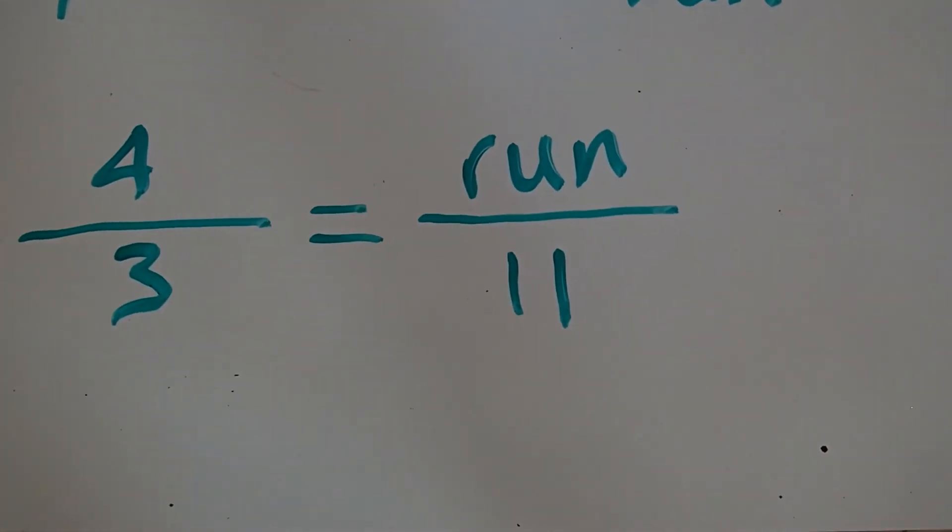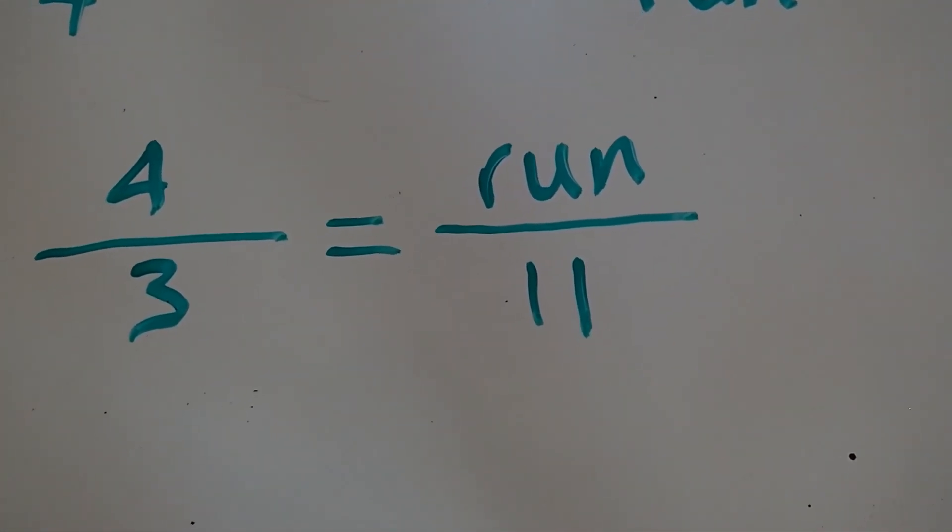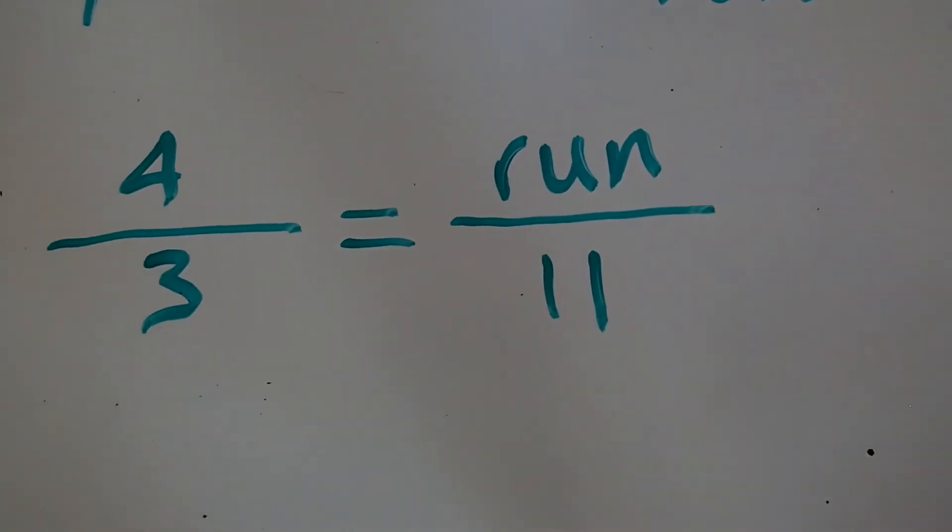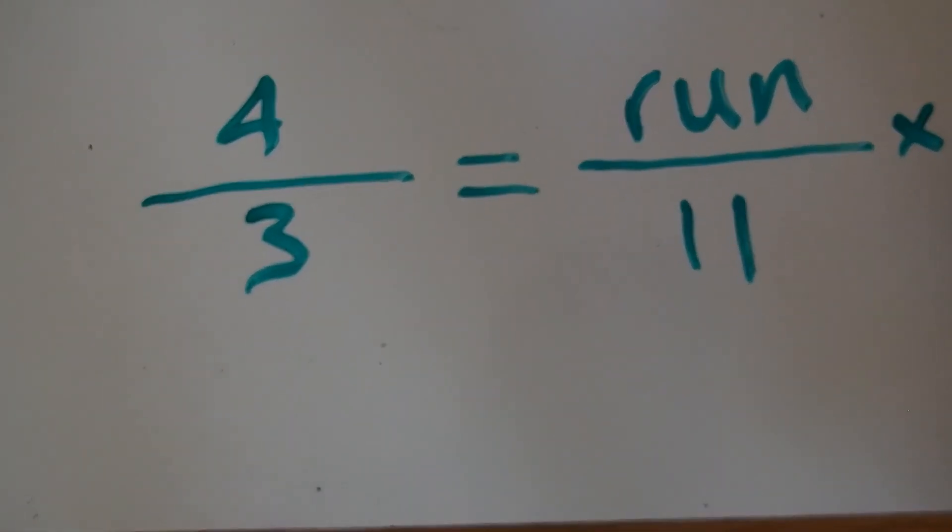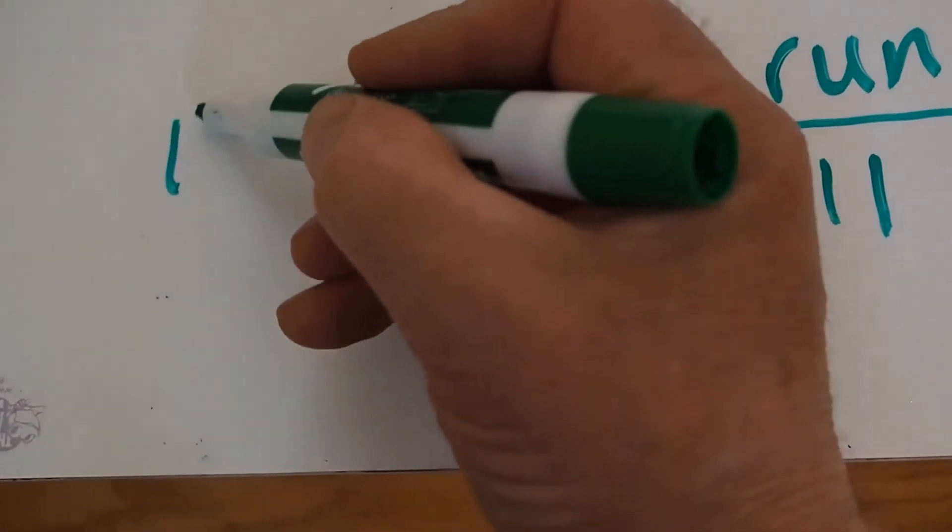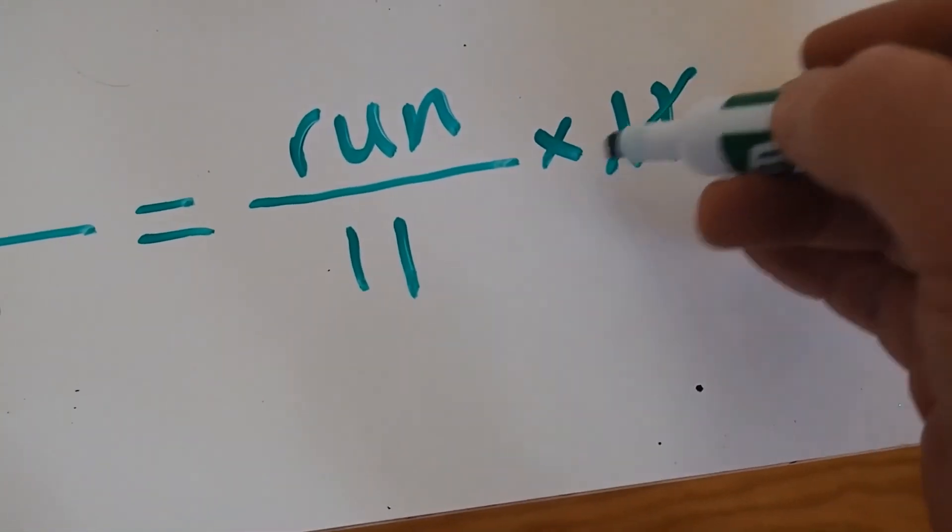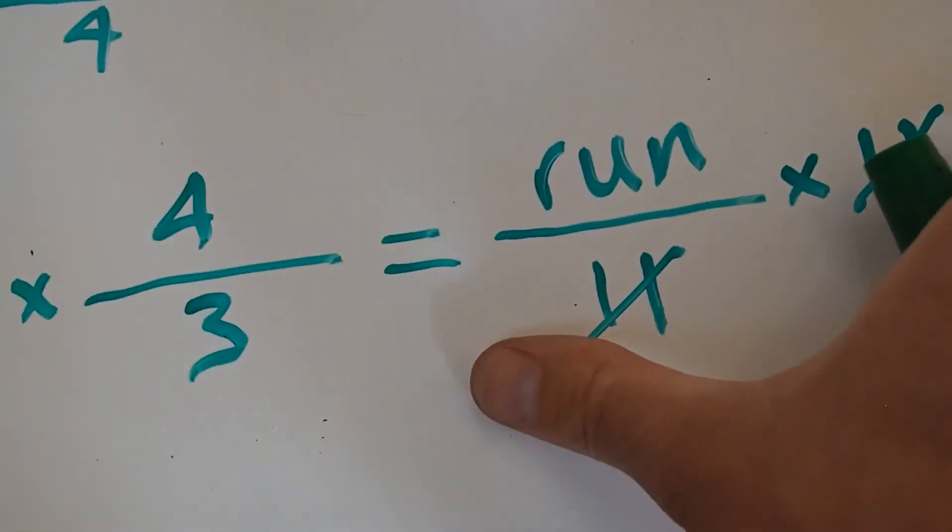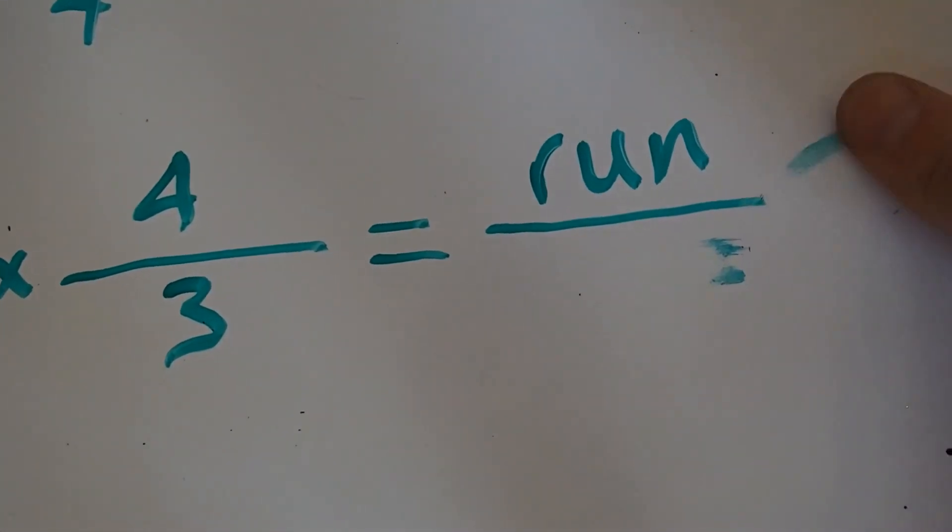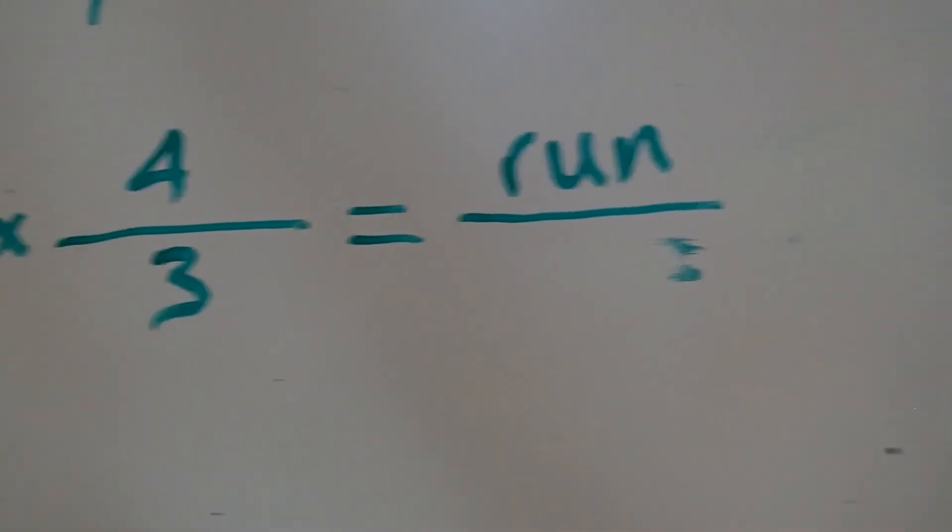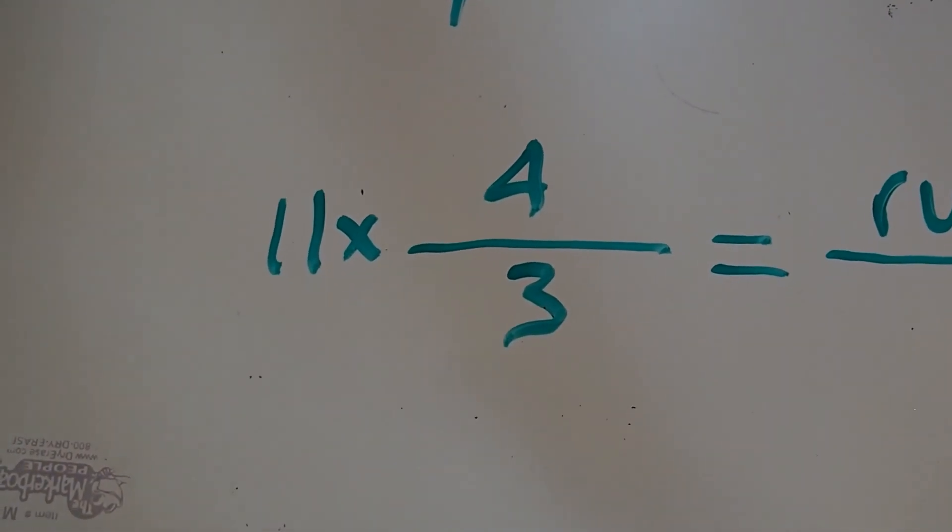And now I solve for the variable, which in this case is run. The way I'm going to do that is I'm going to multiply both sides by eleven. And on this side, the eleven cancels out. And I'm left with run equals eleven times four divided by three.